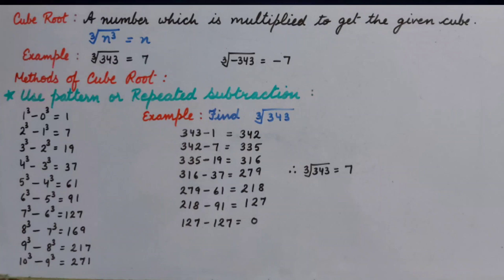Methods of cube root. First method is using pattern or repeated subtraction. For repeated subtraction we have to make the pattern first.